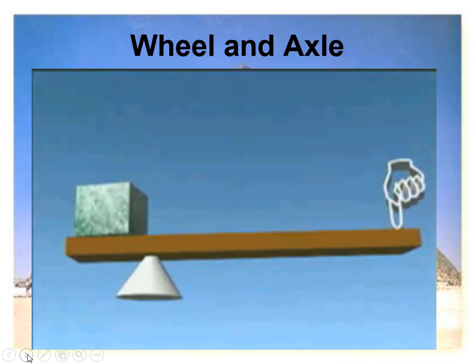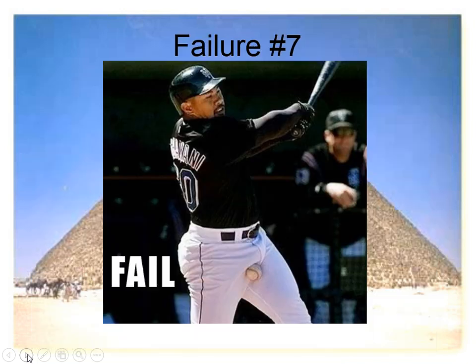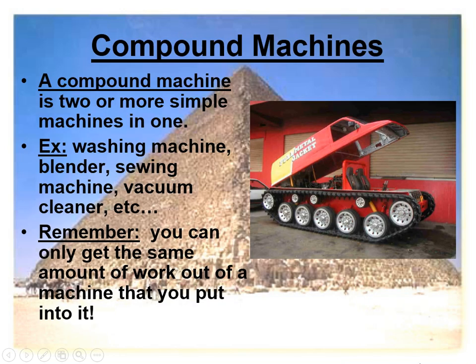We're also going to look at compound machines. A compound machine is two or more simple machines put together and used as one. There are lots of examples: washing machines, blenders, sewing machines, et cetera. Remember, you can only get the same amount of work out of it that you put into it — it's never going to be able to do more.